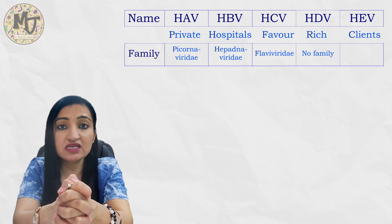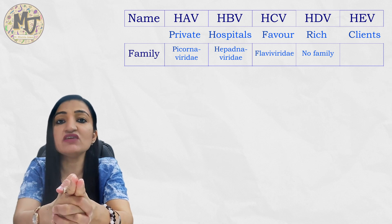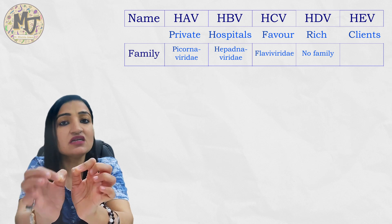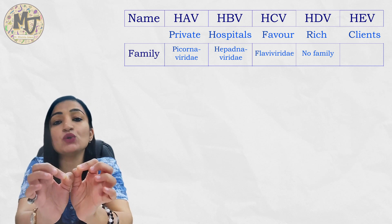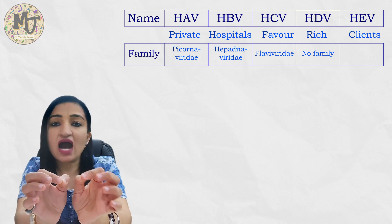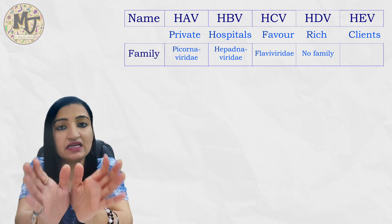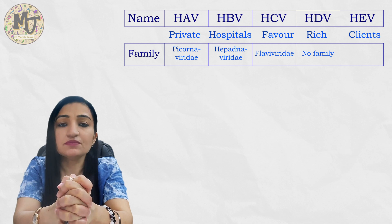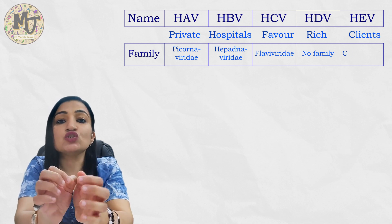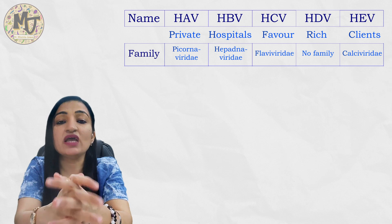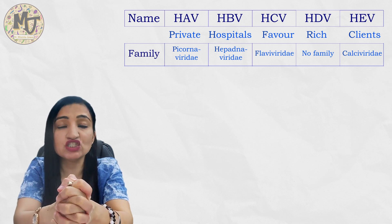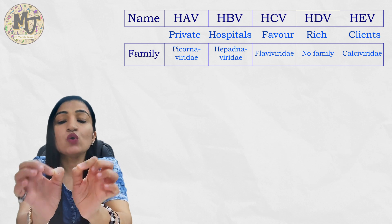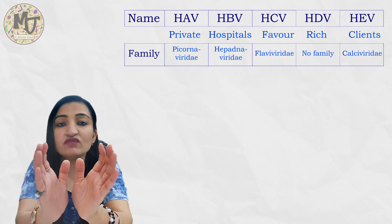HDV depends on Hepatitis B virus for its replication because HDV does not have the gene to make its own envelope, making it a defective virus that does not belong to any family. From R, just remember that HDV is an RNA virus. Lastly, C of 'Clients' refers to the Caliciviridae family, so Hepatitis E virus (HEV) is a calicivirus.